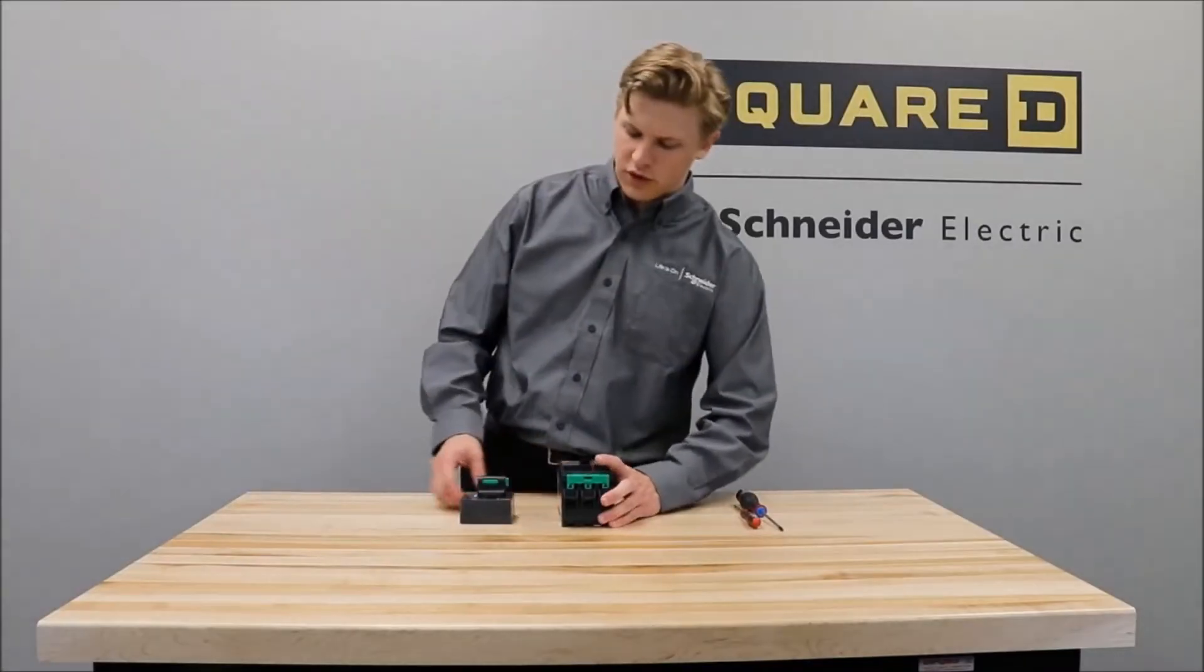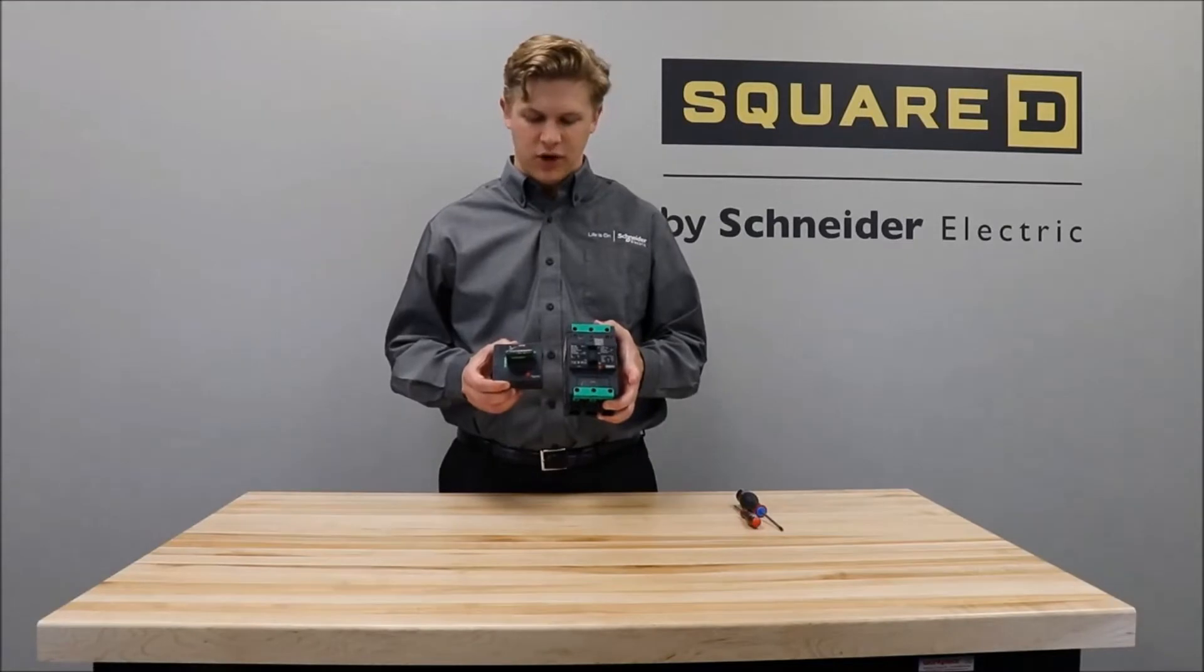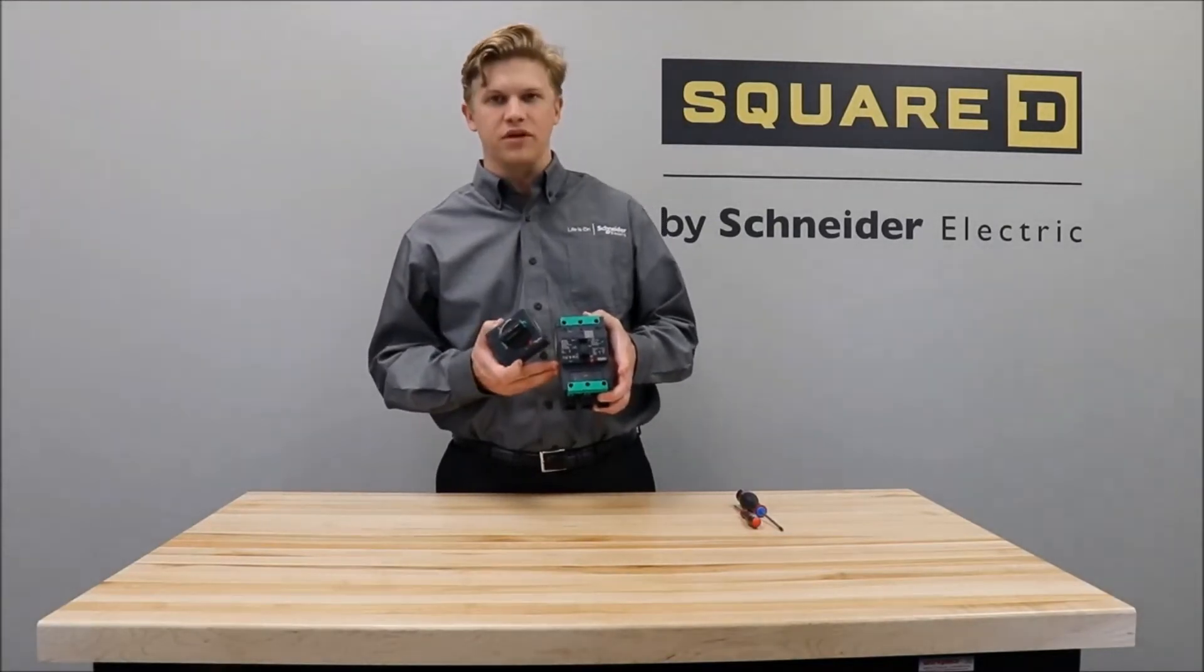In this video we'll be showing you how to install the LV426930 direct mount rotary handle onto the power packed B-frame circuit breaker.